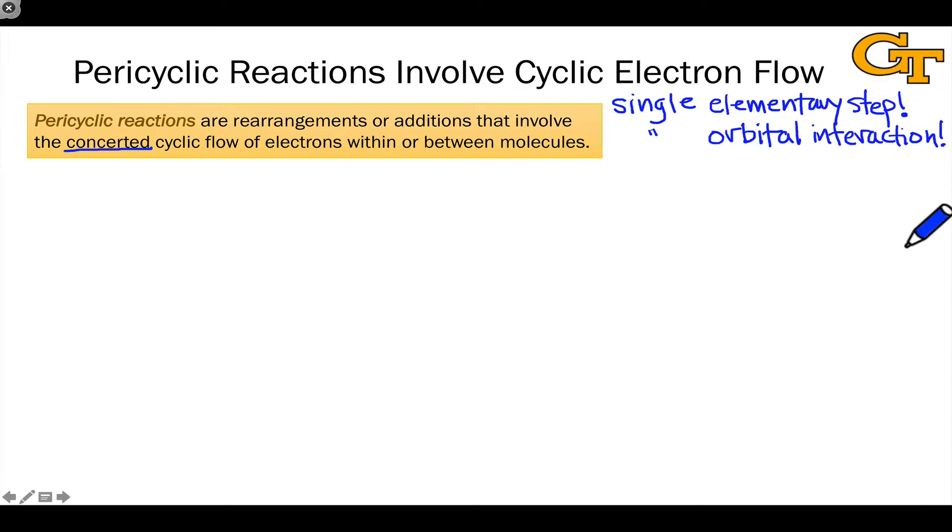We'll see, for example, the configurations of starting materials often preserved in the products because of the concerted nature of these reactions. And electron flow is cyclic, and we'll see that in the examples that we look at on this slide. There are three general classes of pericyclic reactions.